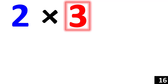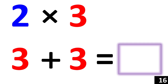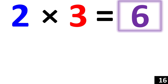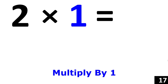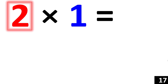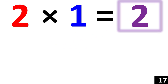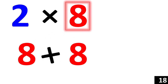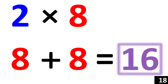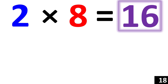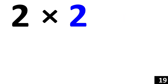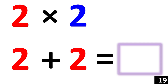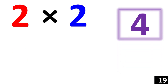2 times 5 is the same thing as 5 plus 5. 10. So 2 times 5 equals 10. 2 times 3 is the same thing as 3 plus 3. 6. So 2 times 3 equals 6. For 2 times 1, we just use the rule of 1. Any number times 1 is that number. So 2 times 1 is equal to 2. 2 times 8 is the same thing as 8 plus 8. 16. So 2 times 8 equals 16. 2 times 2 is the same thing as 2 plus 2. 4. So 2 times 2 equals 4.